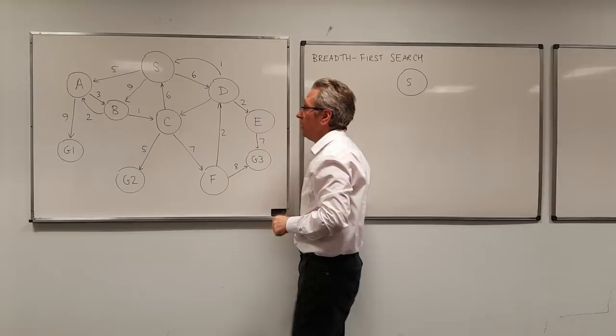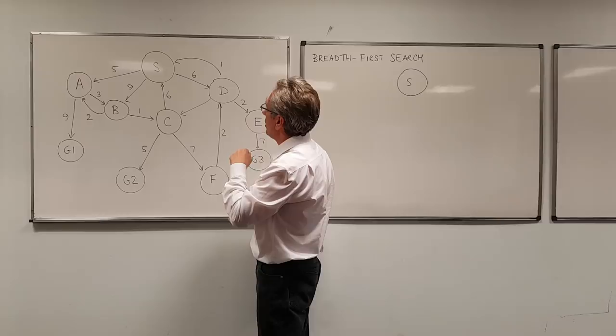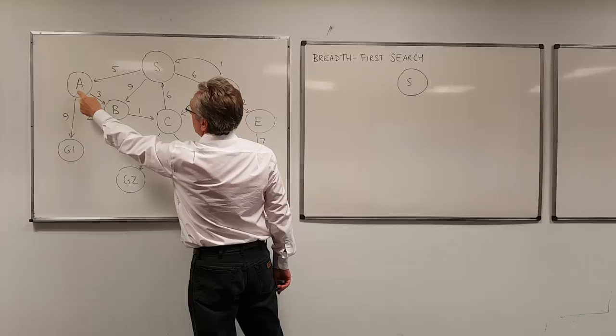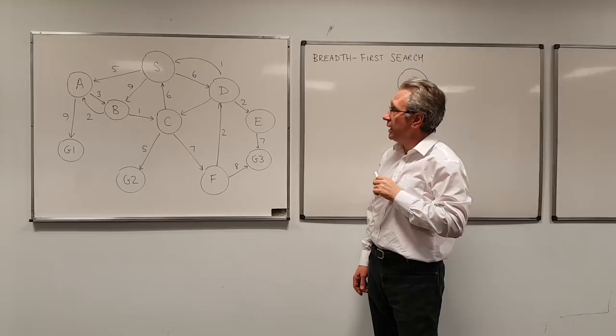So it costs the agent six units to go from here to here. You'll notice that not all actions are reversible. So for example, if the agent decides to go from state S into A, then it can't directly go back from A into S.